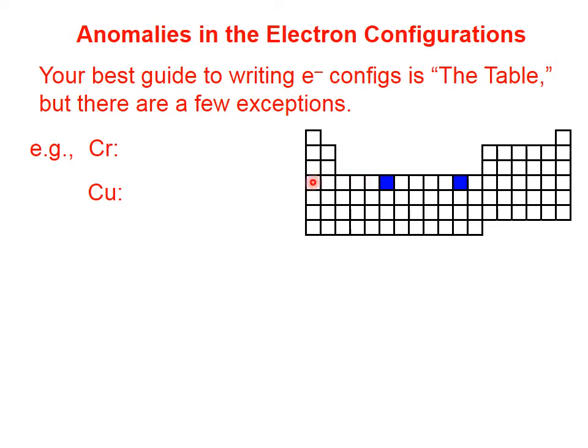That's a total of 6 electrons in this fourth period, but it turns out that chromium doesn't actually end in 4s2, 3d4. It ends with 4s1, 3d5.